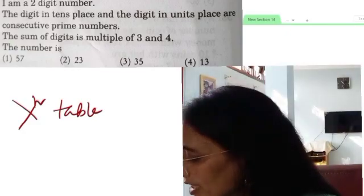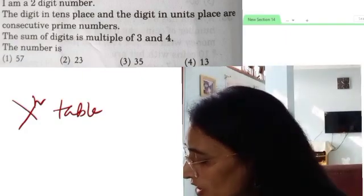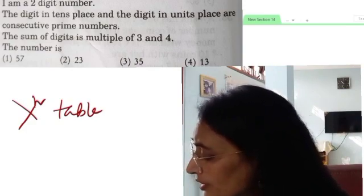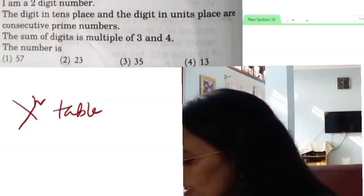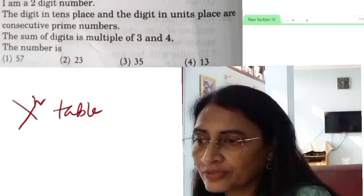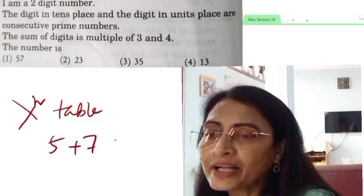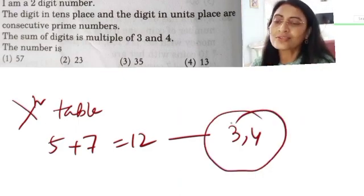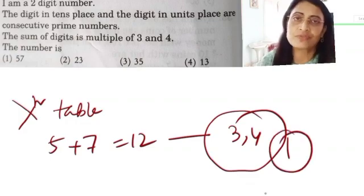Here we have to write, sum of digits is multiple. So from options, we will find which option has sum that is multiple of both three and four. Here you see, in the first option, five and seven, both digits sum, five plus seven is equal to 12. And 12 is a multiple of both three and four. Here you see, three fours are 12, four threes are 12. One is the correct answer. So this is a fraction of a second work.